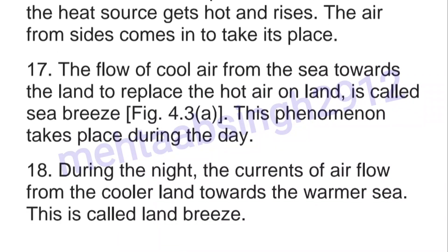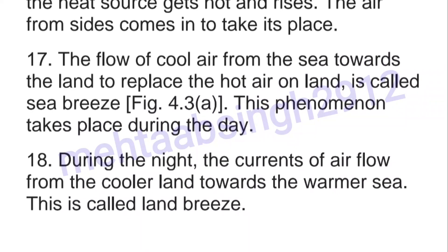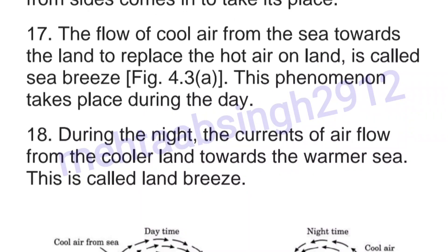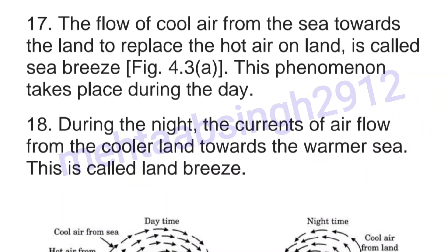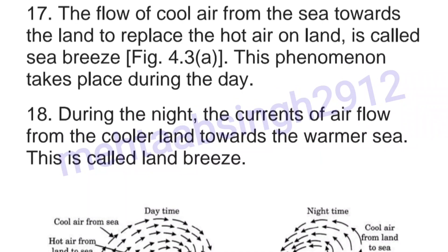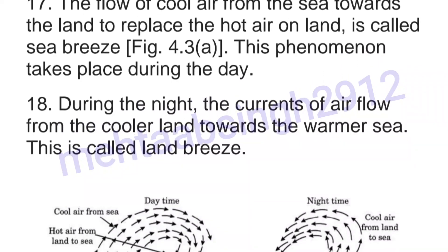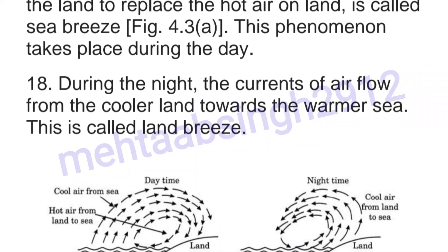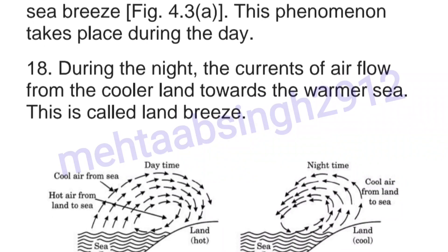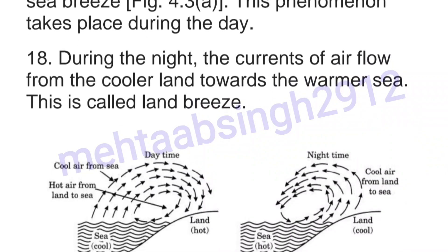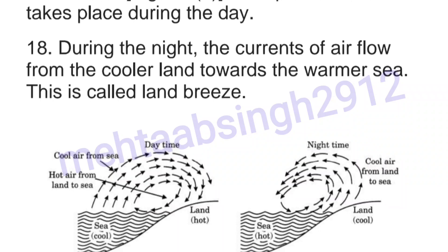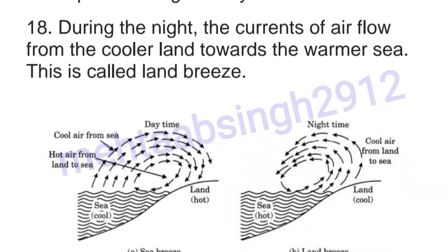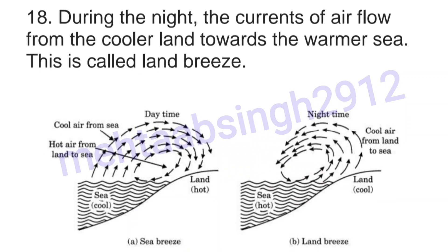The air from the sides comes in to take its place. Seventeenth, the flow of cool air from the sea towards the land to replace the hot air on land is called sea breeze. This phenomenon takes place during the day. Eighteenth, during the night, the currents of air flow from the cooler land towards the warmer sea. This is called land breeze.